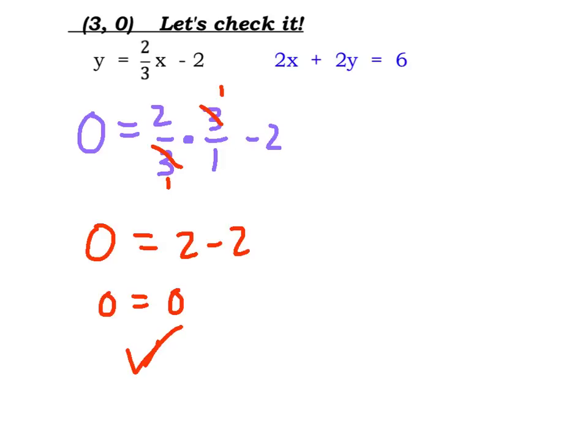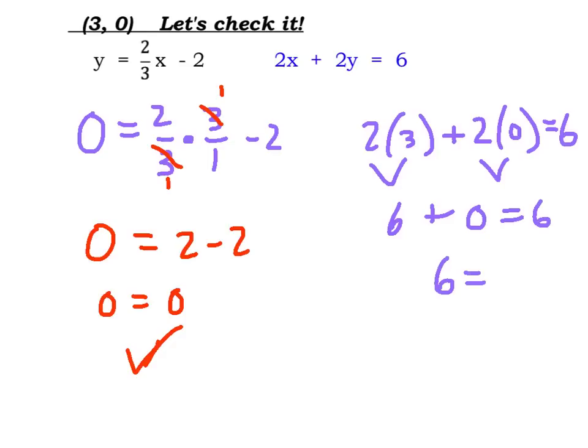My second equation, again, I'll substitute 3 in for x and 0 in for y, so I'm going to have 2 times my x value plus 2 times my y value, and we're going to hope that equals 6. 2 times 3 does give me 6, 2 times 0 is 0, and 6 plus 0 equals 6. 6 equals 6 also checks out, so we know that our ordered pair does work.